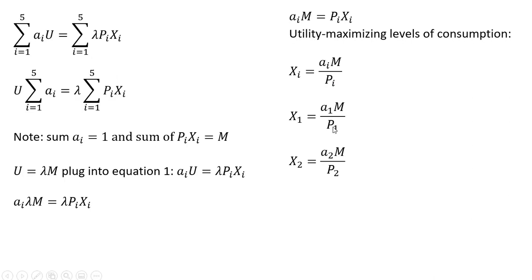Just replace the price with the respective price and exponent for each good: for good one, use the exponent on good one and the price of good one; for good two, the exponent on good two and the price of good two; for good three the same thing, and so on.